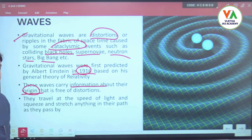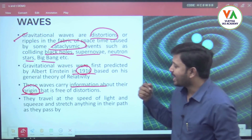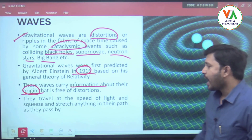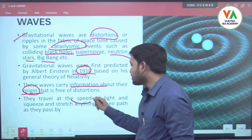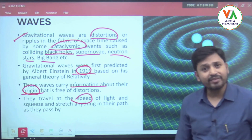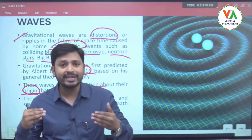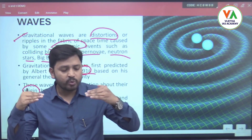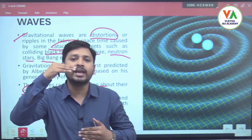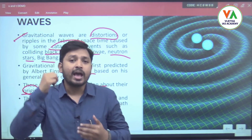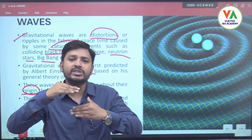All this information is carried by gravitational waves, and they travel at the speed of light. In the process of traveling, they squeeze in one direction and elongate in the other direction, then squeeze in the opposite direction causing elongation on the other side.